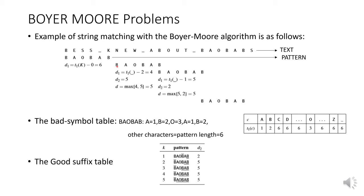After shifting, B is matched with B and A is matched with A, but B has mismatched with underscore. So now calculate D1. D1 = shift value of underscore, which is 6, minus 2 matched characters. 6 minus 2 is 4. D1 is 4. Now D2 has to be calculated as well.